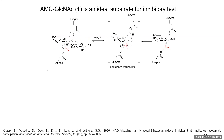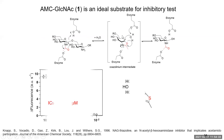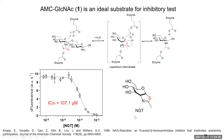Next, we used AMC GlcNAc as a substrate to expand its applications to inhibition testing. As mentioned, some enzymes including Dispersin B use a substrate-assisted mechanism. People have developed NAG-thiazoline as a transition-state mimic to inhibit these enzymes. Testing NAG-thiazoline against Dispersin B using AMC GlcNAc, we obtained a clean and clear inhibition curve with an IC50 value of around 100 micromolar.